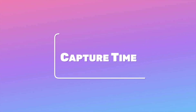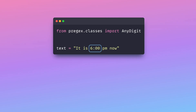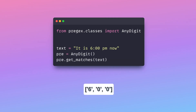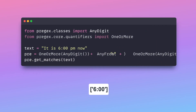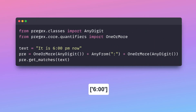Besides capturing URLs, PrecX can also be used to capture time. To match a time in a text, we can use anyDigit to match any numeric character followed by a colon between two anyDigit methods. To match several digits on either side of the colon, we can enclose one or more around anyDigit.